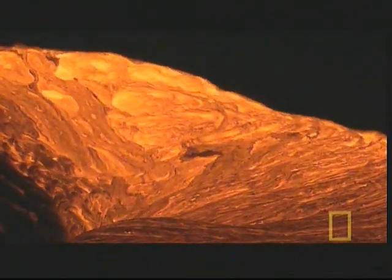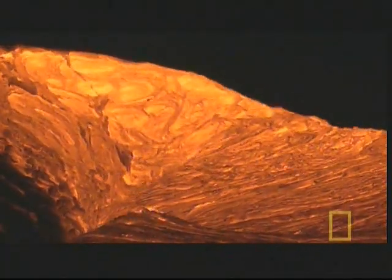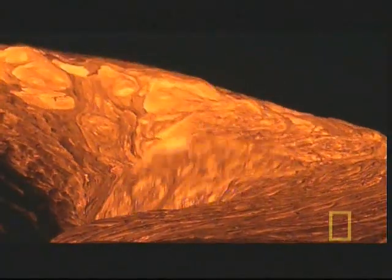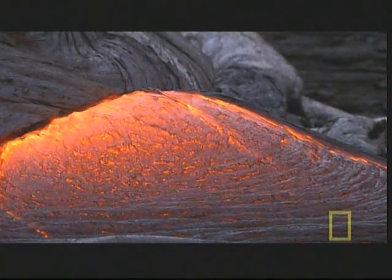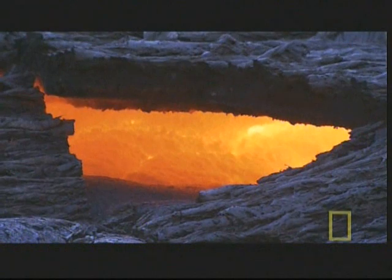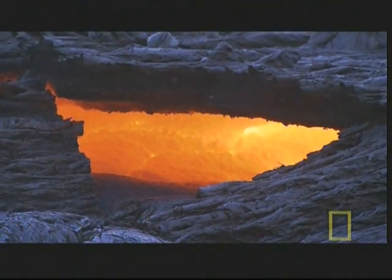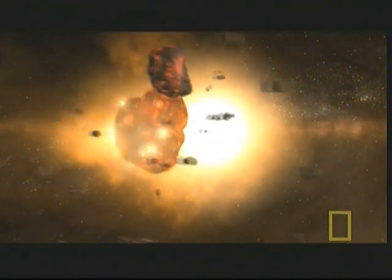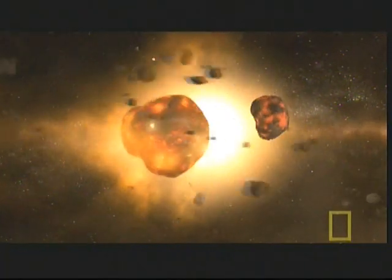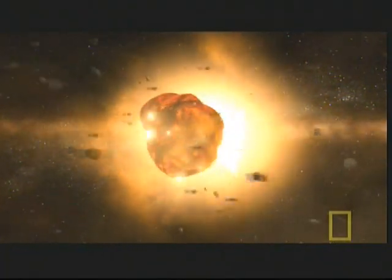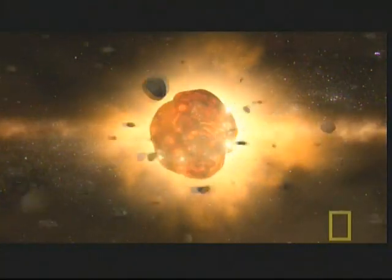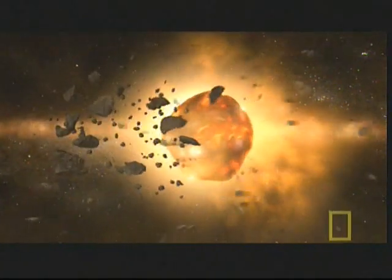This cycle is repeated over and over to generate what scientists call a convection cell or convective flow. But where's the heat source keeping our earthy soup performing its circular gymnastics? Well, most of it is left over from the spectacularly energetic collisions and gravitational crushing that created the earth to begin with. It's still trapped down there and it wants out.